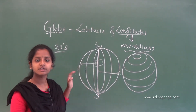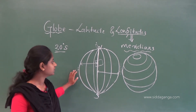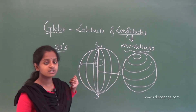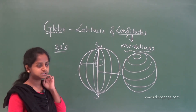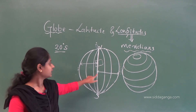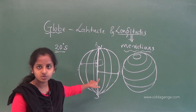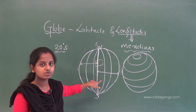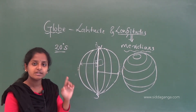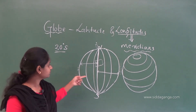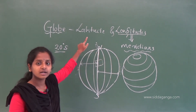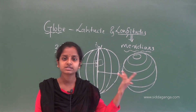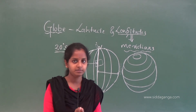The prime meridian and the 180-degree meridian divide the Earth's surface into two equal halves — the eastern hemisphere and the western hemisphere. Starting from the prime meridian (0 degrees), we count up to 180 degrees eastward and also up to 180 degrees westward. The 180-degree meridian from east and west both lie on the same line.